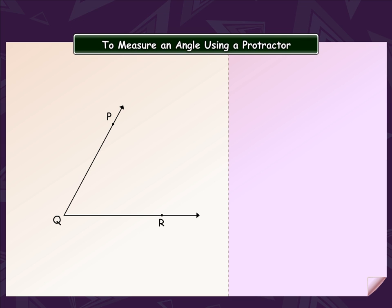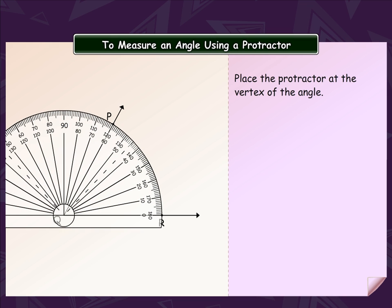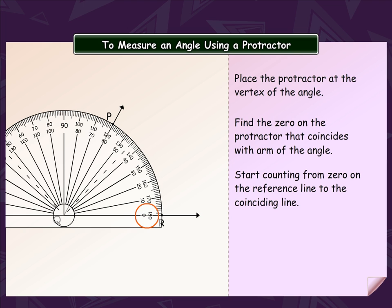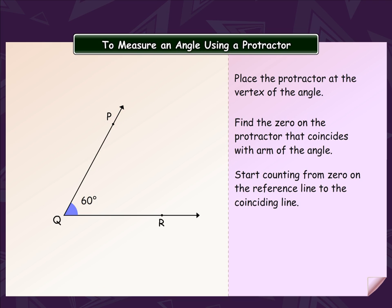Let's now see how to use a protractor to measure an angle. Place the protractor at the vertex of the angle, point Q. Find the zero on the protractor that coincides with the arm of the angle. This is the zero that lies on ray QR. Start counting from zero on the reference line to the coinciding line. The number is 60. This number is the measure of the angle. Therefore, the measure of angle PQR is 60 degrees.